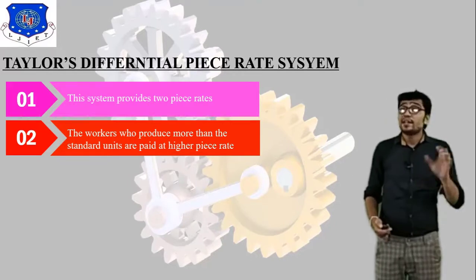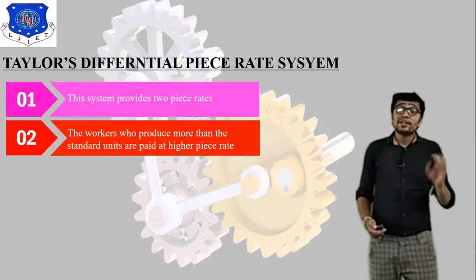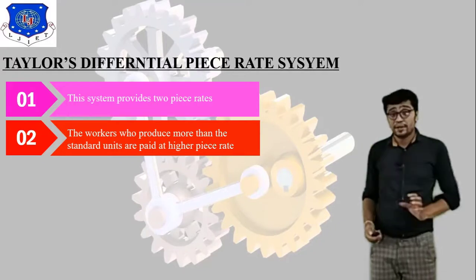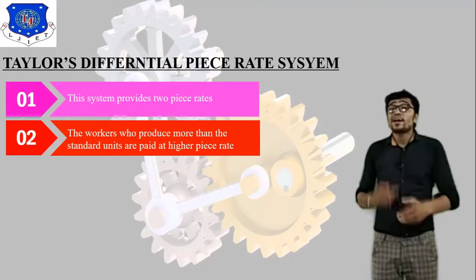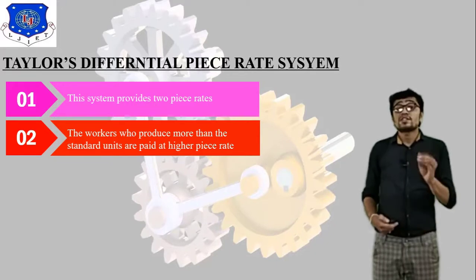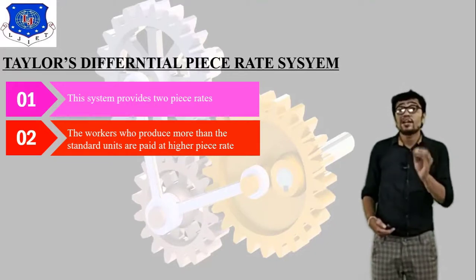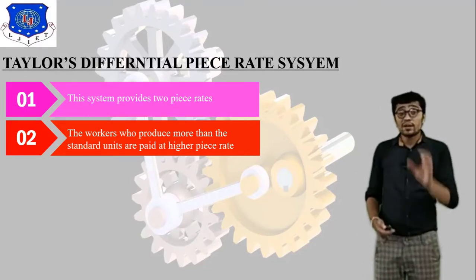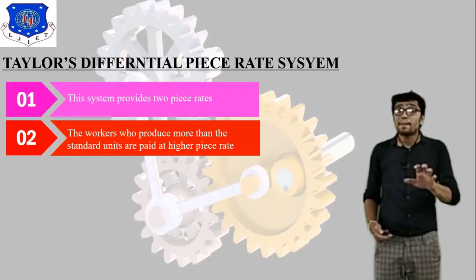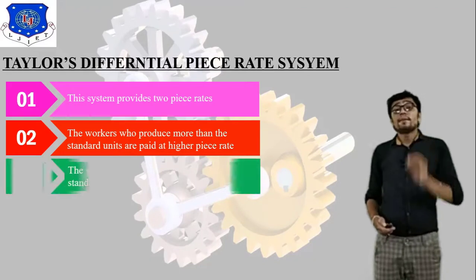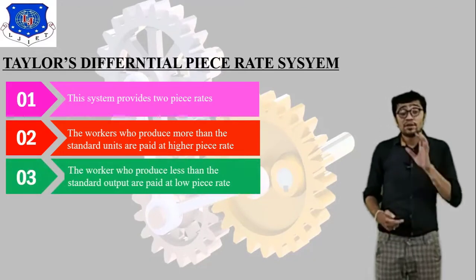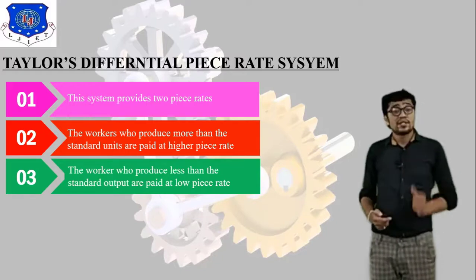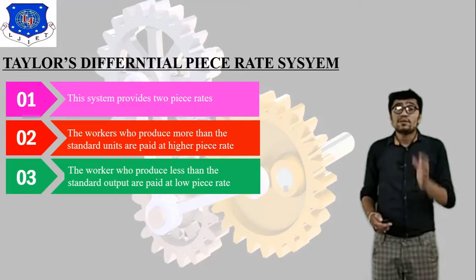For example, if standard output is 12 units and a worker produces 14 units, the worker gets extra bonus — this is the incentive. In Taylor's Differential Piece Rate System, the worker who produces more than standard units is paid at a higher piece rate. On the other hand, the worker who produces less than standard output is paid at a lower piece rate.